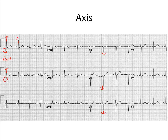If you have up in lead one but down in lead two, that is left axis deviation. If you flip those — down in lead one and up in lead two — that's right axis deviation. There's one more iteration: both downward deflected in lead one and lead two. This is pretty rare and is called extreme right axis or northwest axis. You're not going to see that often, but it's good to know it exists.